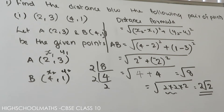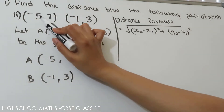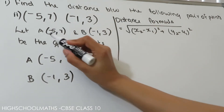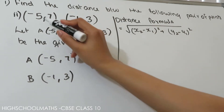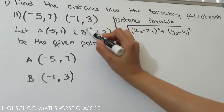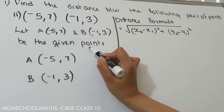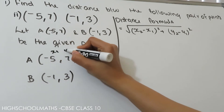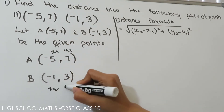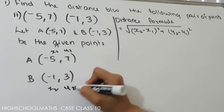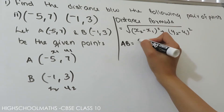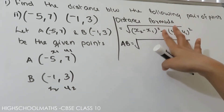For the second part, the points are minus 5, 7 and minus 1, 3. Let A be the point (minus 5, 7) and B be the point (minus 1, 3). We assign x1 equals minus 5, y1 equals 7, x2 equals minus 1, y2 equals 3. That is the distance formula. The distance AB equals square root of (x2 minus x1) whole square plus (y2 minus y1) whole square.